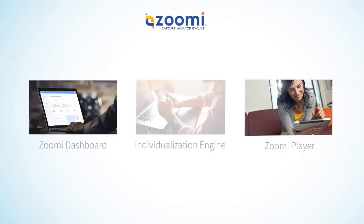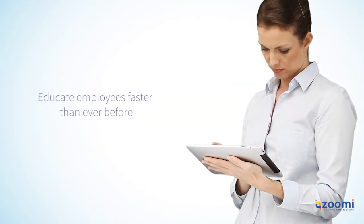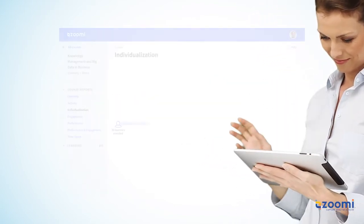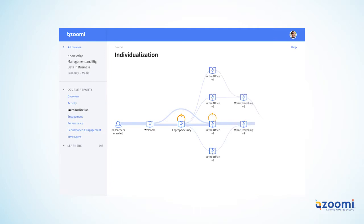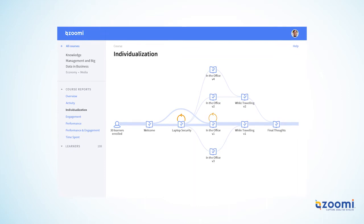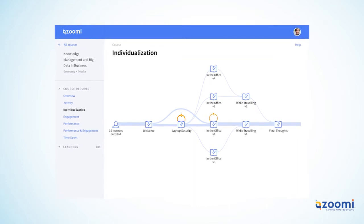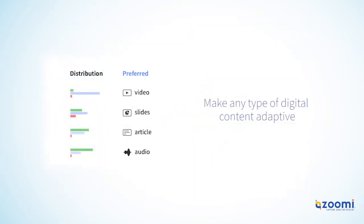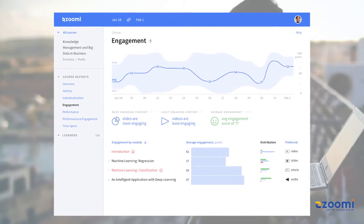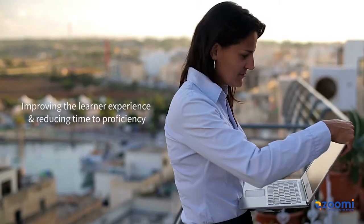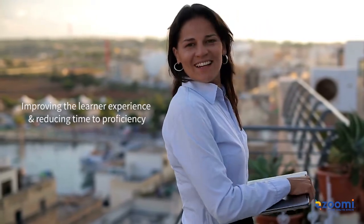Individualization Engine. Educate employees faster than ever before. Process data from the player and your enterprise social network to create automatic, real-time, individualized learner experiences based on each learner's unique learning style. Make any type of digital content adaptive, predict future learner outcomes, and align and track training content to specific business objectives, improving the learner experience and reducing time to proficiency.